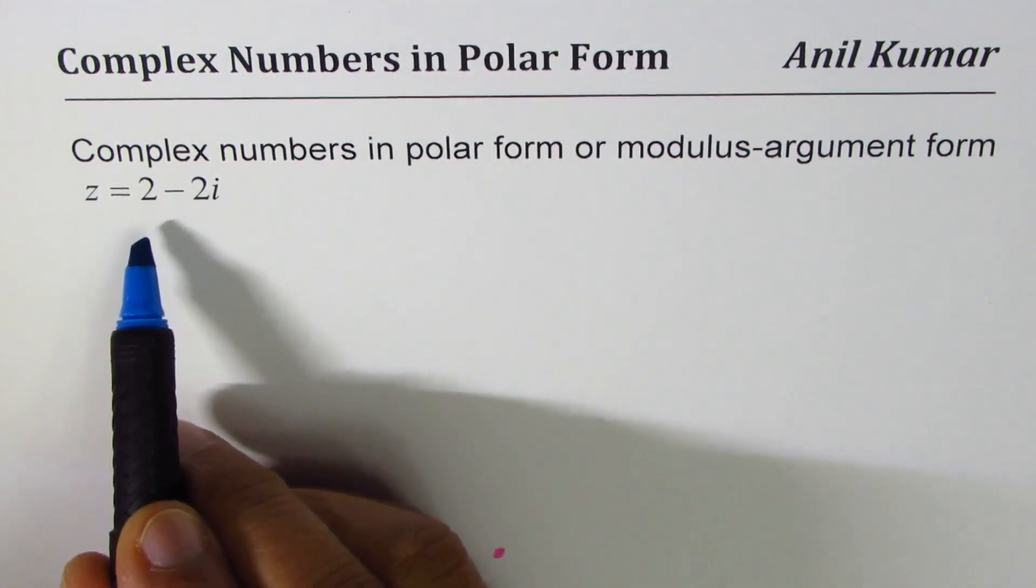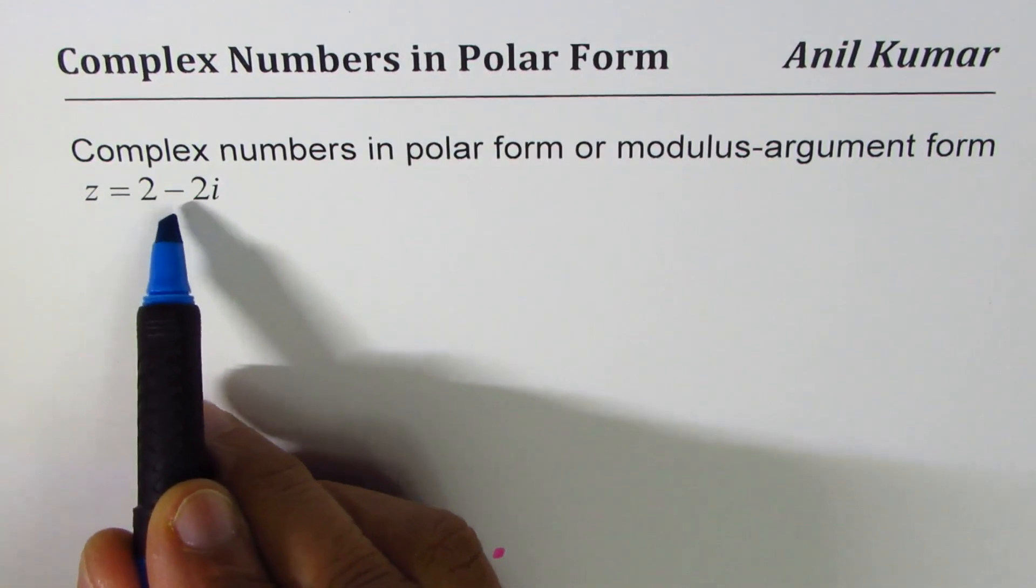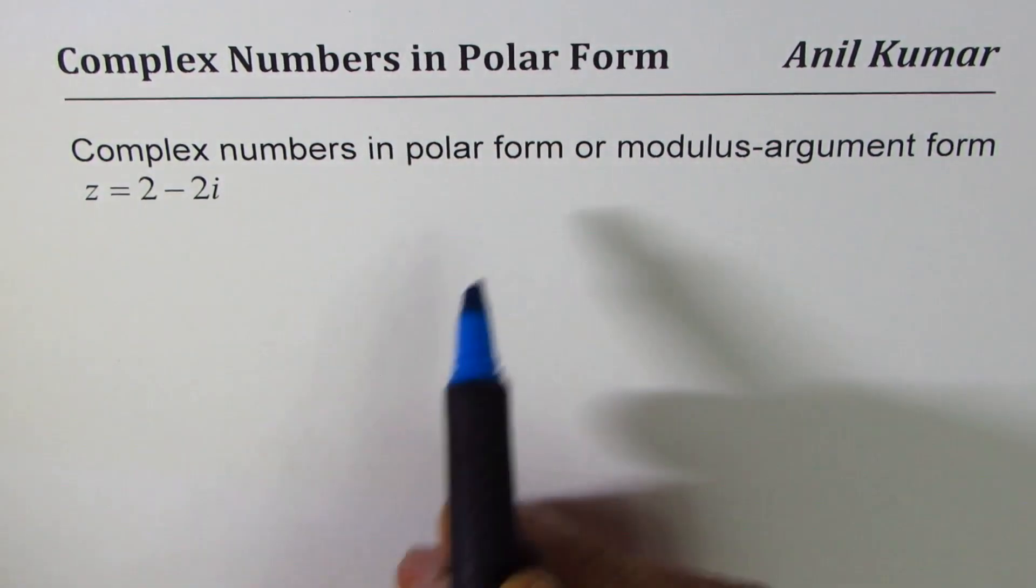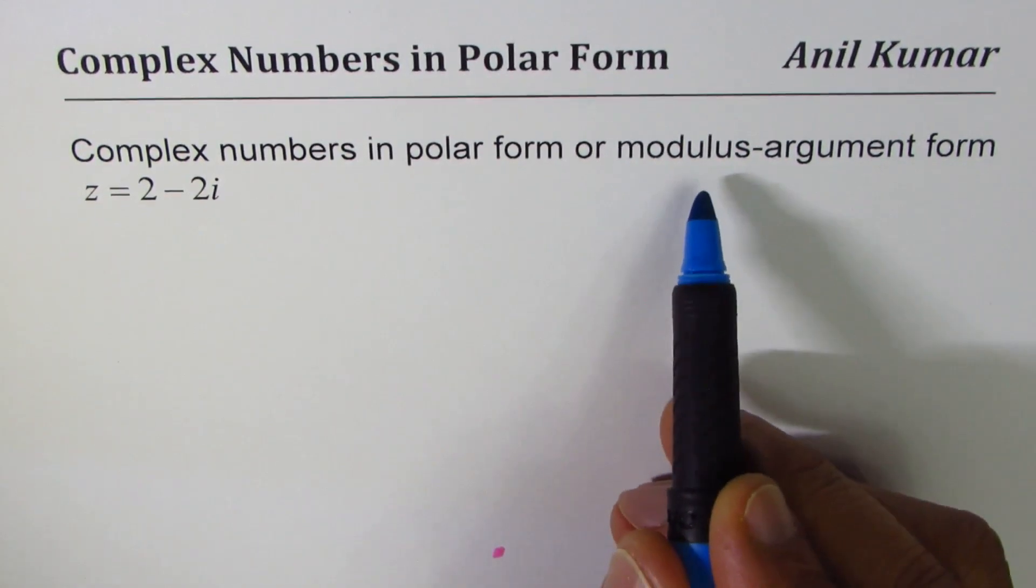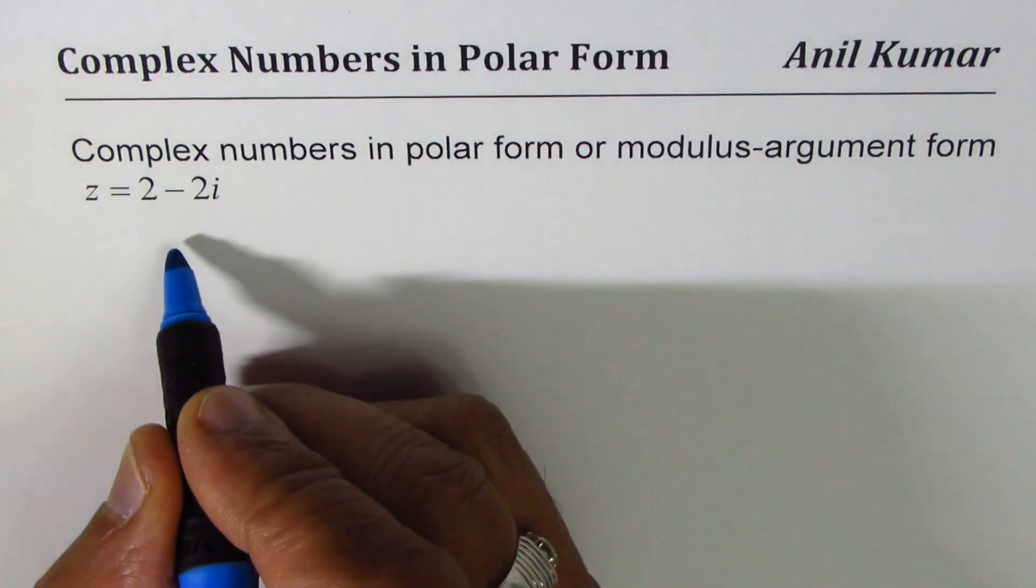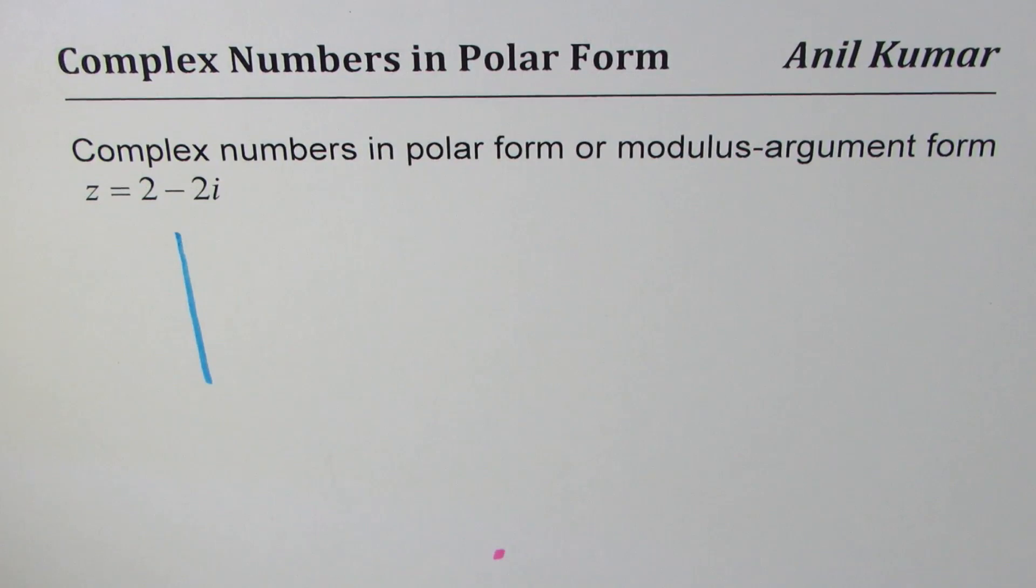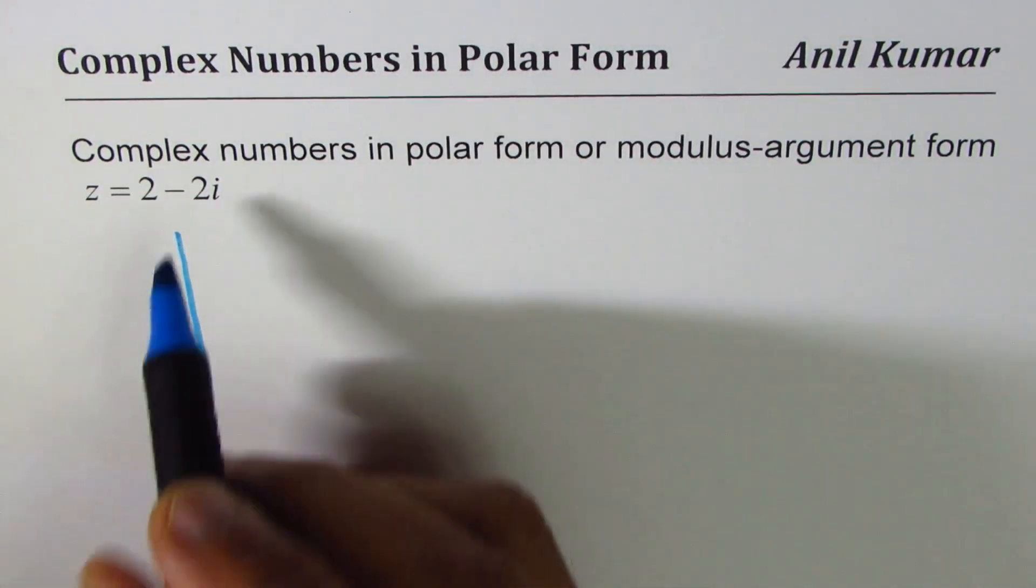We'll write this complex number z equals 2 minus 2i in polar form. Polar form as you know is also known as modulus argument form. Let's first see how this complex number can be placed, in which quadrant it is.